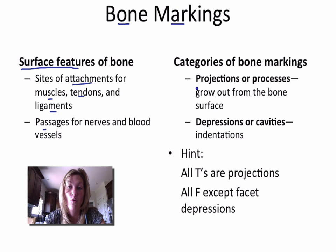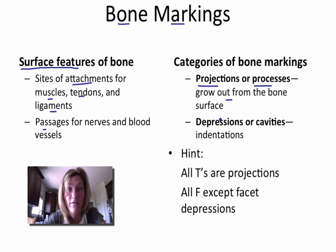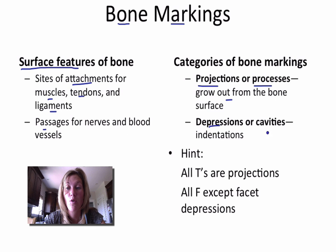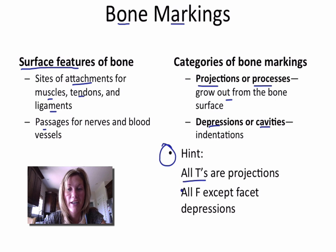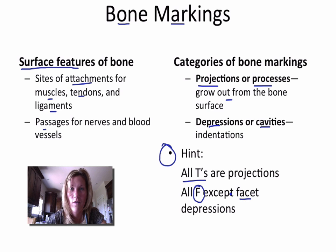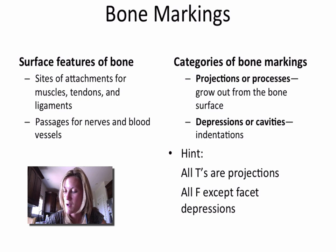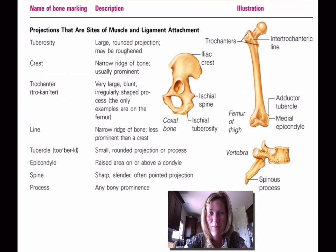There are a couple categories of bone markings. The first are projections or processes, meaning they grow out from the bone surface. A depression or cavity is an indentation in a bone. A helpful hint: any bone marking that starts with a T is a projection, and any bone marking that starts with an F — except for facet — is a depression. Hopefully that will help you when memorizing these.